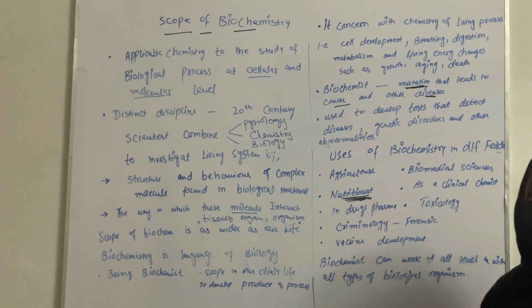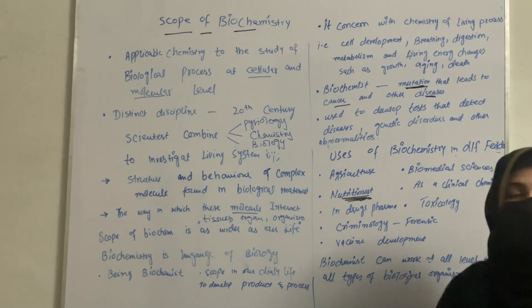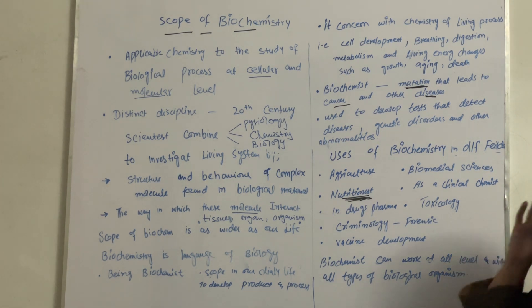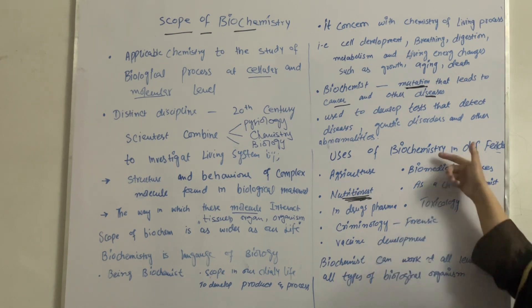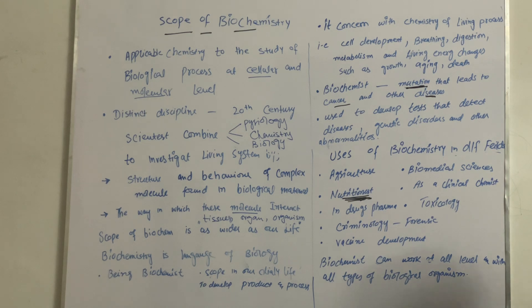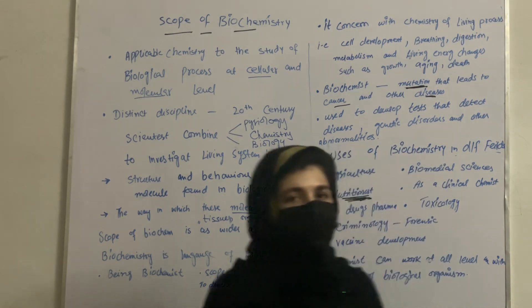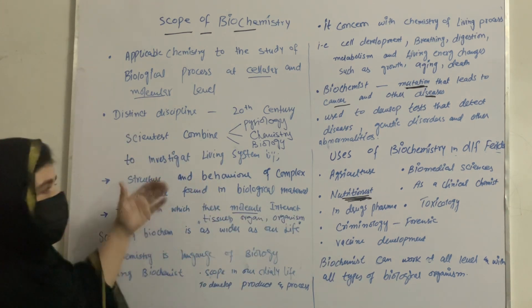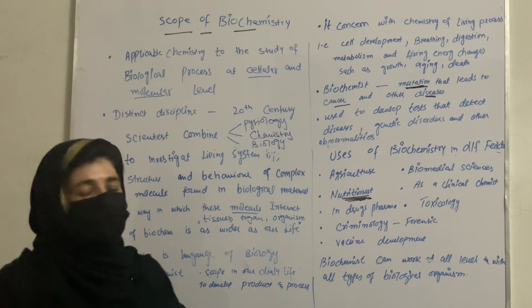Biochemistry also plays a very important role in the detection of forensic cases. In vaccine development, biochemistry plays a very important role — for example, in the control and curing of COVID-19, which started at the end of 2019. Vaccines developed against viruses also rely heavily on biochemistry. So biochemists can work at all levels and with all types of biological organisms. The scope and application of biochemistry is vast, and we have covered some of its most important uses here. We will meet in the next lecture, inshallah.